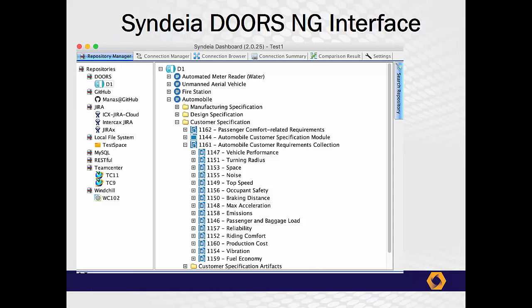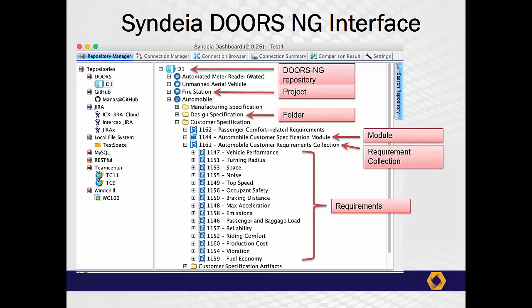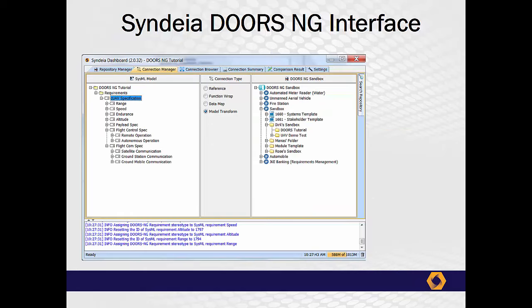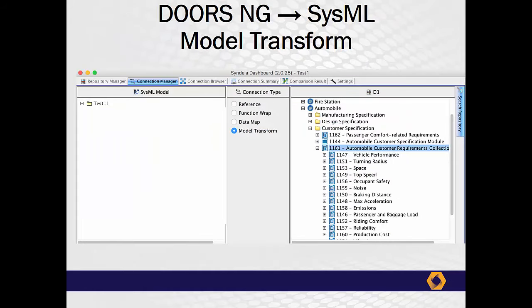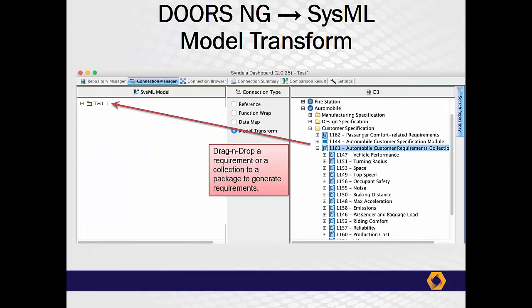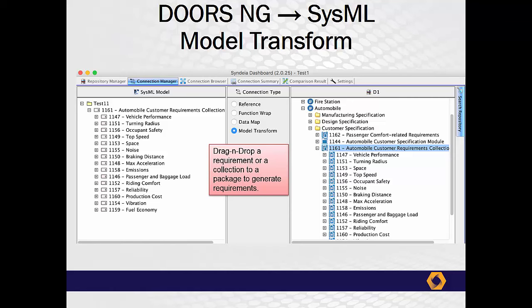DOORS NG is the latest version of the requirements management tool from IBM Rational. Using Cyndia, we can link any SysML element to a DOORS requirement and access it directly from a SysML browser or diagrams. Beyond that, Cyndia can transform a DOORS requirement into a SysML requirement, or vice versa, and keep them connected for comparison and updating as the project progresses. The same capability carries over into multi-level requirement structures like DOORS NG collections and modules.